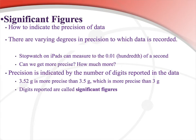So how do scientists actually indicate the precision of their data? There are varying degrees of precision to which data is recorded. Think about your iPads — at the top it might say the time to the nearest minute. But along the bottom, you might use the stopwatch, which can go out to the hundredth of a second. Those times have more precision to them. The stopwatch has more precision — it's got more decimal points in the number.